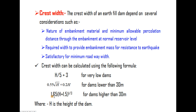Crest width can be calculated using these equations. For low dams: crest width = (H/5) + 3. For dams of 30 meters height: crest width = 0.55√H + 0.2H. For large dams more than 30 meters: crest width = 1.65 × (H + 1.5)^(1/3). Here H is the height of the dam.